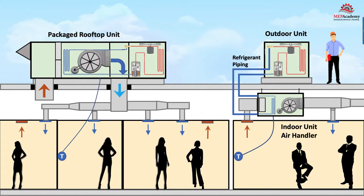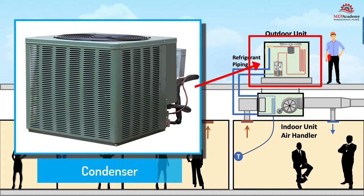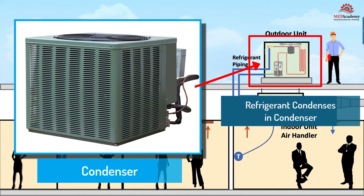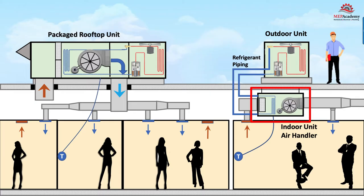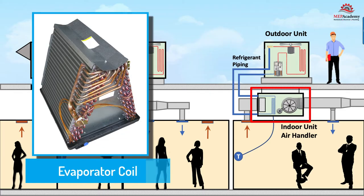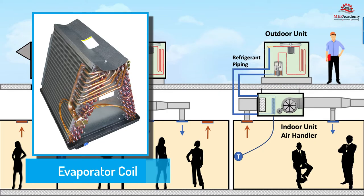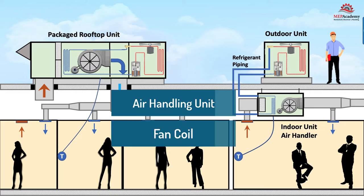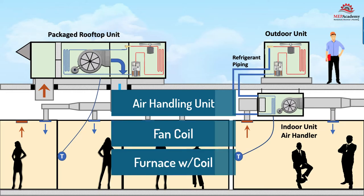The split system is made up of the outdoor unit, often called the condensing unit because this is where the refrigerant condenses from a gas back into a liquid, and an indoor unit where the evaporator is located. The indoor unit can be called an air handling unit, AHU, fan coil, or a furnace with coil.